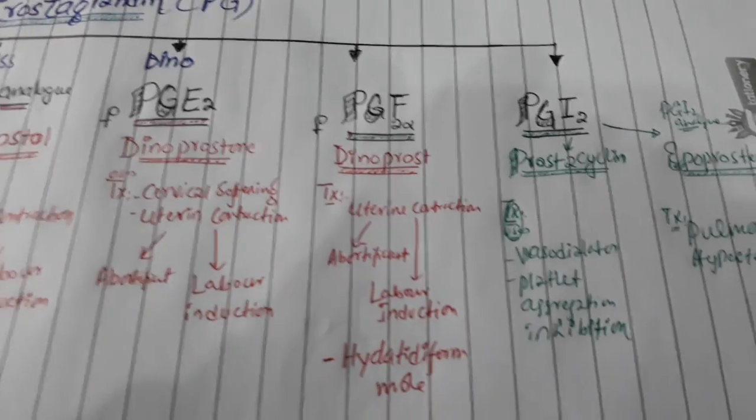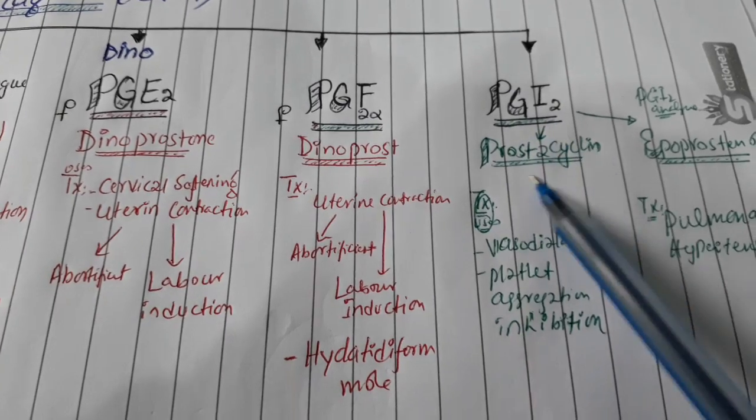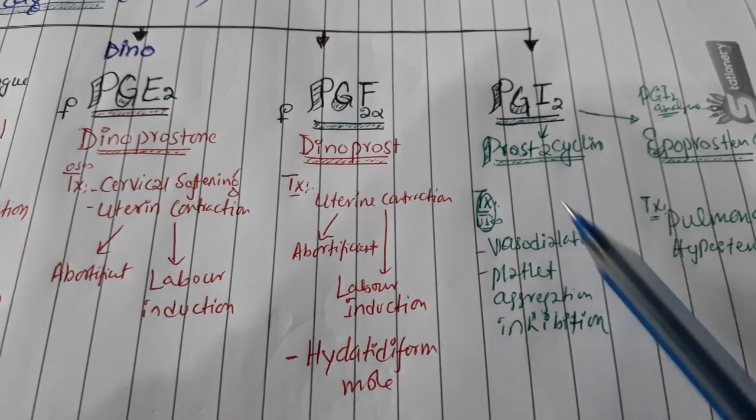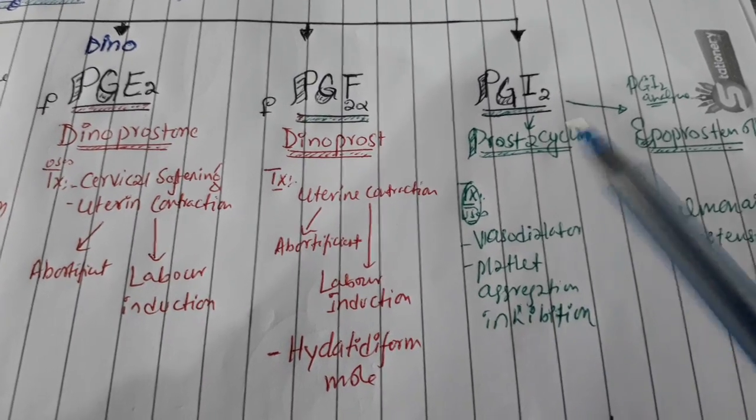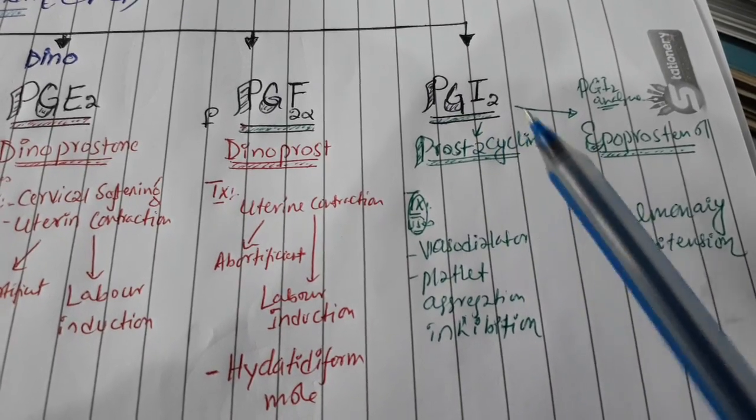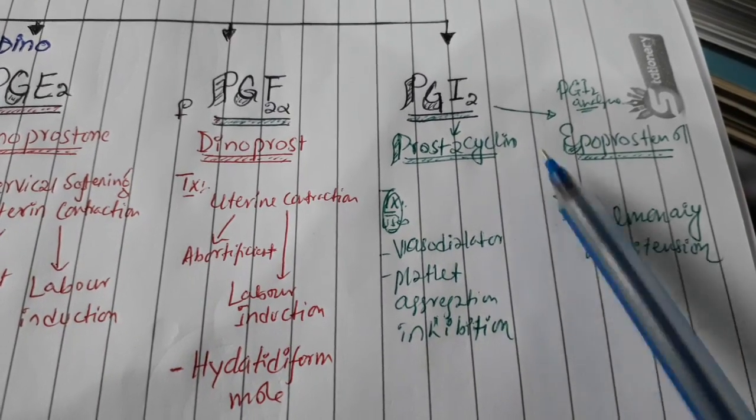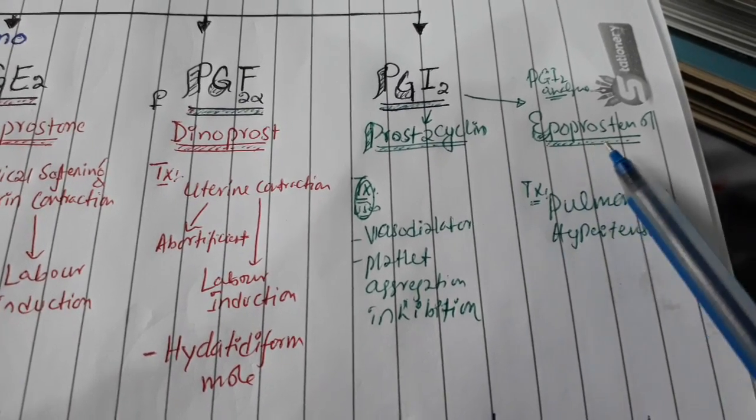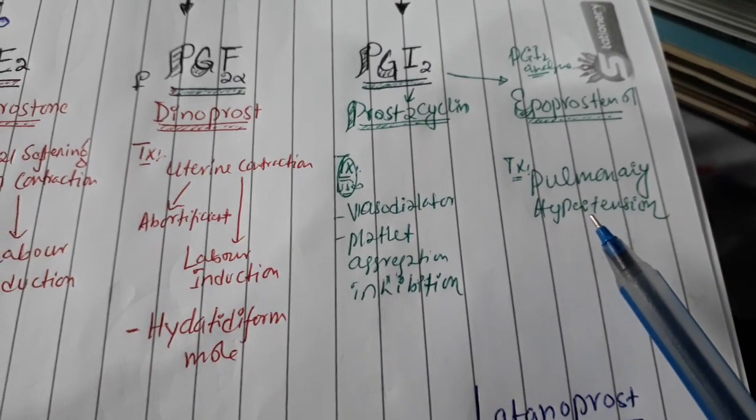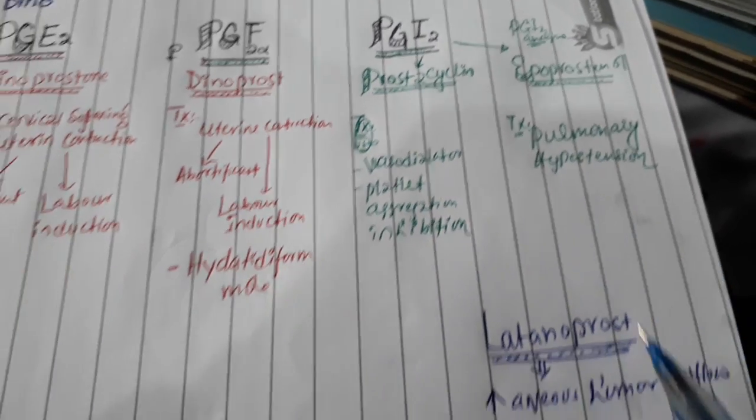Now Prostaglandin I2 which is normally produced in our body, that is called PGI2 - prostacycline. It can cause vasodilation and inhibition of platelet aggregation. Now the analog which we use clinically, the PGI2 analog or prostacycline analog is called epoprostenol. Epoprostenol could be used in pulmonary hypertension because the function is vasodilation.